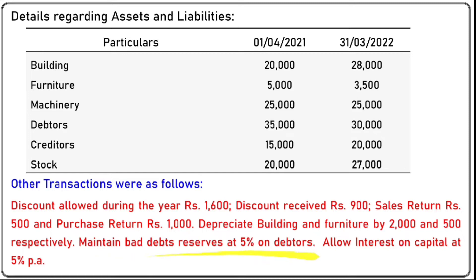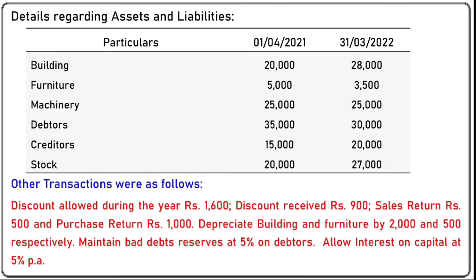Maintain bad debt reserve at 5% on debtors, and allow interest on capital at 5% per annum. So we have debtors and creditors opening and closing given, discount allowed and discount received given, sales return and purchase return given. We are also given depreciation, bad debt reserve, and interest on capital. It's a very easy, very basic example.